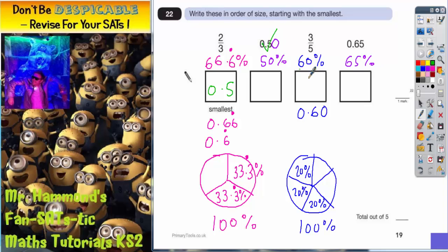Next smallest is 60 percent which came from three fifths so we should have three fifths in there next. Then 65 percent which came from 0.65 so 0.65 goes in next and finally 66.6 recurring percent is the biggest one which came from two thirds. And there's your answer.